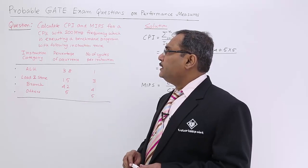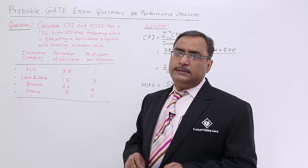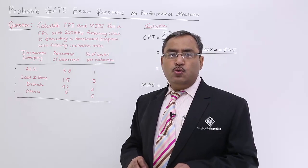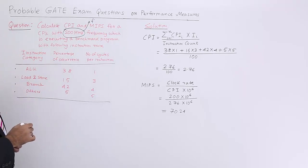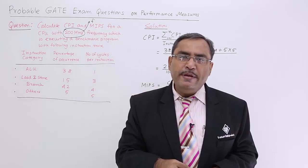Let us discuss the question at first. Calculate the CPI, that is cycles per instruction, and MIPS, million instructions per second, for a CPU with 200 megahertz. That means this particular CPU is having this frequency. This is nothing but your F or frequency.